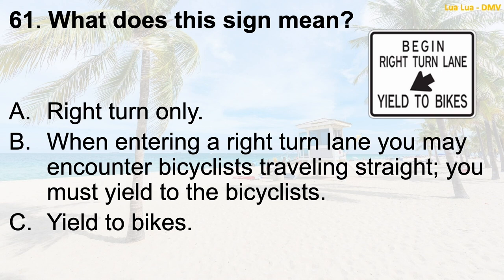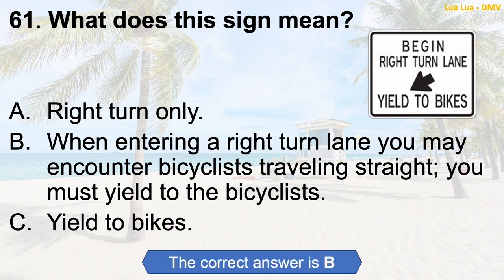The correct answer is B: When entering a right turn lane, you may encounter bicyclists traveling straight. You must yield to the bicyclists.